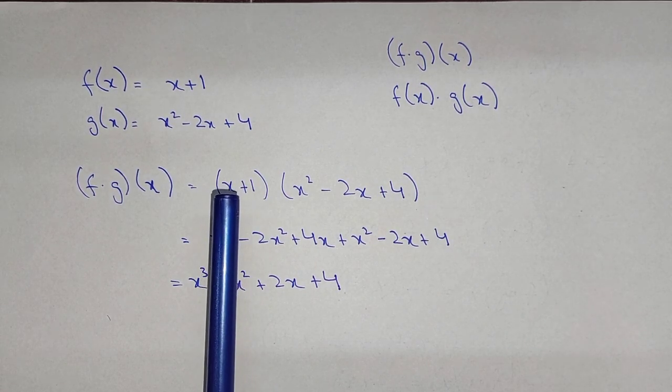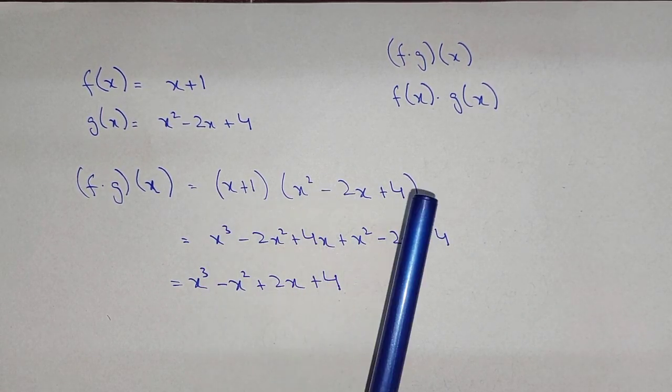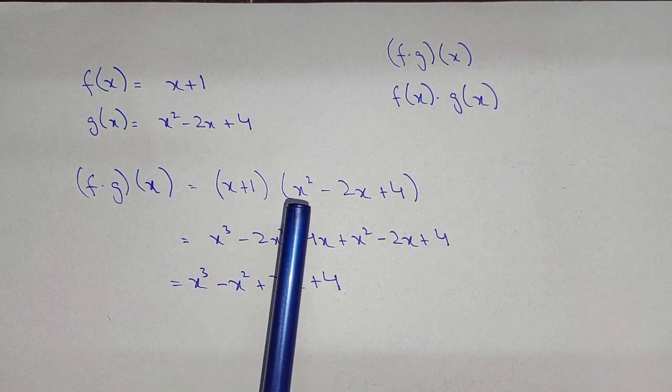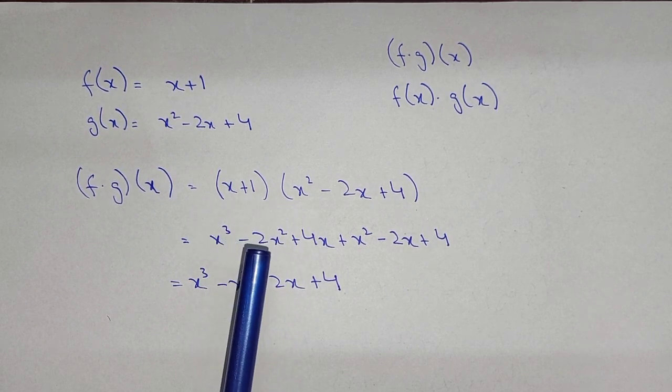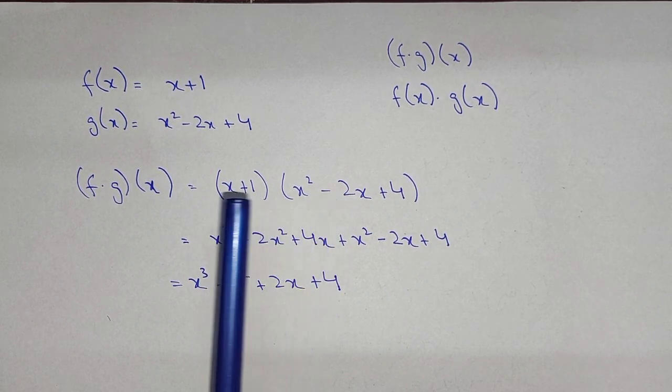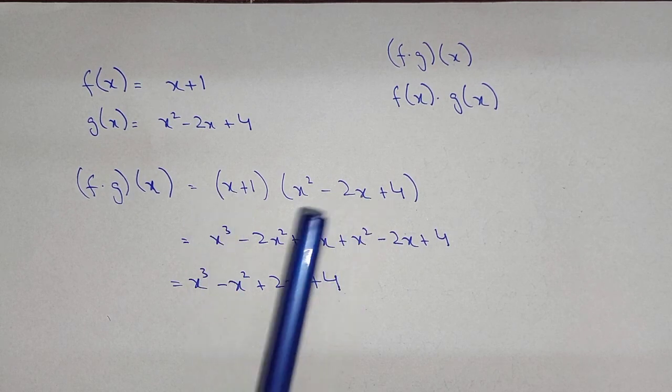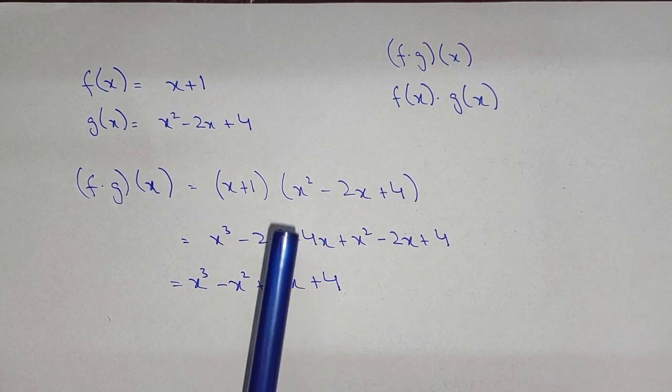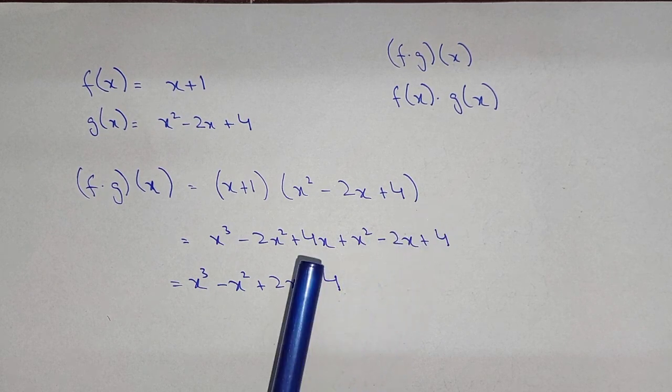So first take the x and go through all the terms. So x multiply x square, that will be x cube, minus 2x into x, that will be minus 2x square, plus x into 4, that will be plus 4x.